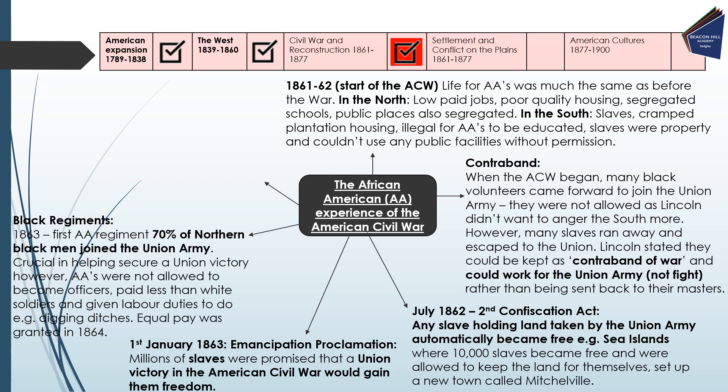In 1863, we see the 1st African-American Regiment. 70% of Northern black men joined the Union army and they were crucial in helping secure a Union victory. However, African-Americans were not allowed to become officers, they were paid less than white soldiers, and they were given labour duties such as digging ditches. Equal pay was finally granted in 1864. These points — not being allowed to become officers and being paid less — are good examples to include in an exam question on the African-American experience.